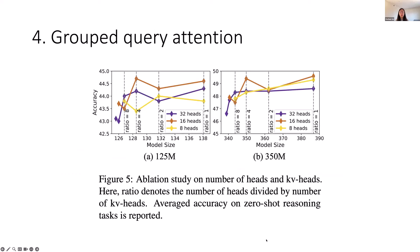We also incorporate grouped query attention into the baseline model design. This technique is another form of weight reuse, where the number of query heads is n times that of the key-value heads, and the KV heads are repeated n times when computing attention scores. By reducing the number of KV heads to a quarter of the query heads, we achieve a significant 10% reduction in model size while experiencing less than 0.2% drop in accuracy.